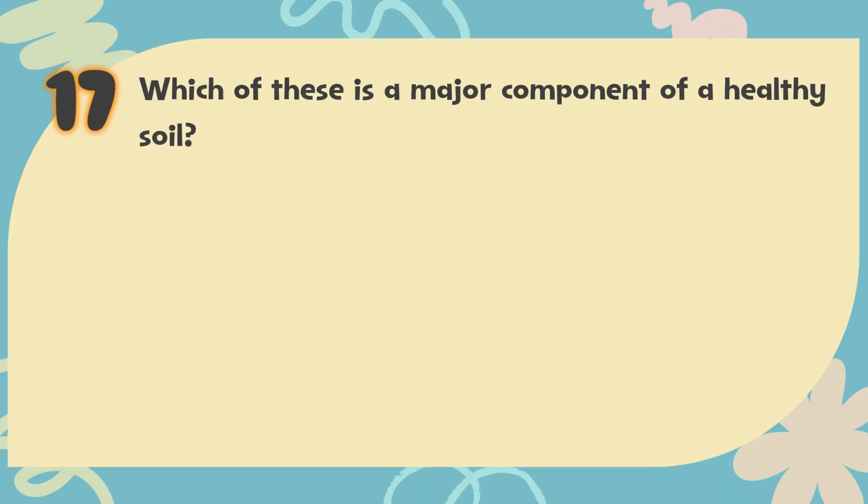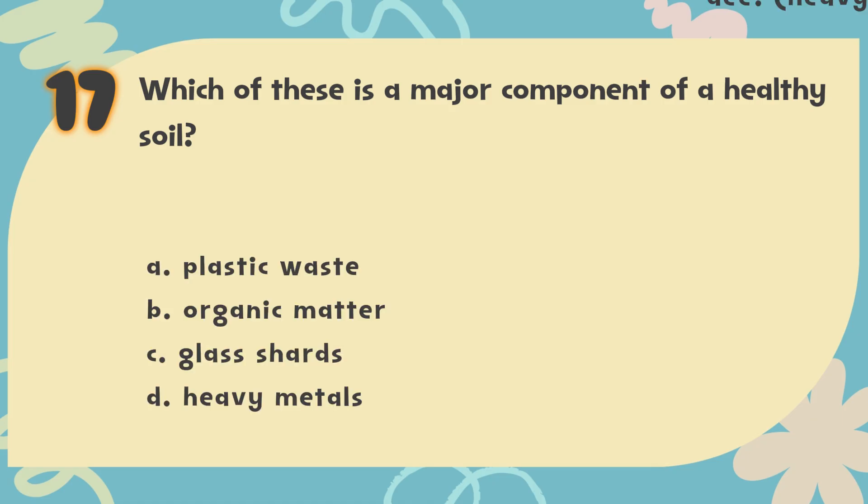Number 17. Which of these is a major component of healthy soil? The choices are: A. Plastic waste, B. Organic matter, C. Glass shards, D. Heavy metals.